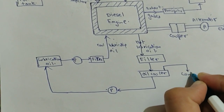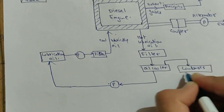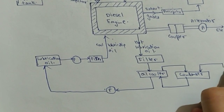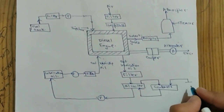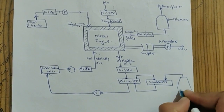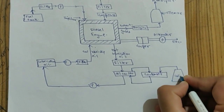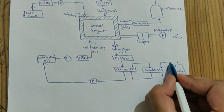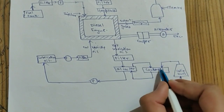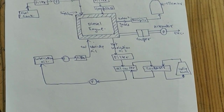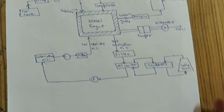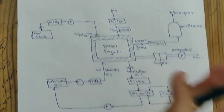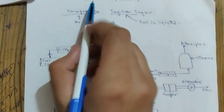The oil cooler is connected to a condenser, and the condenser is connected to a cooling tower. As the hot oil passes around the cooled water pipeline inside the condenser, the oil is cooled and returned to the lubrication chamber. This completes the schematic diagram of the diesel power plant.